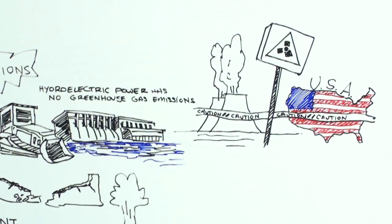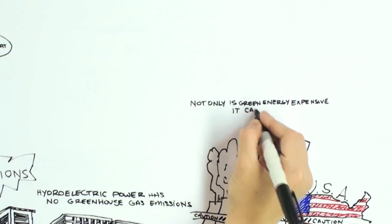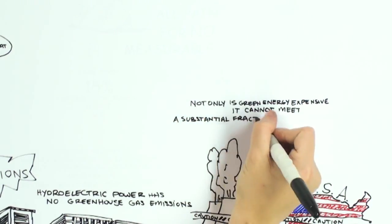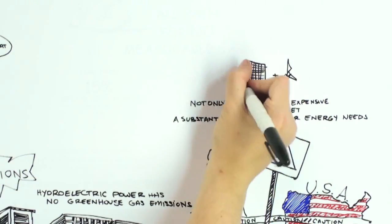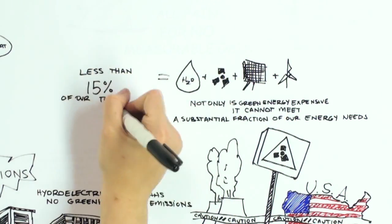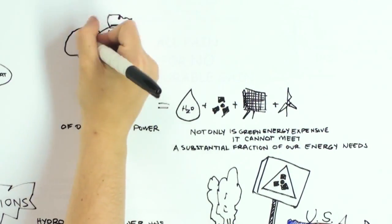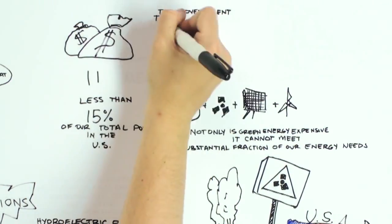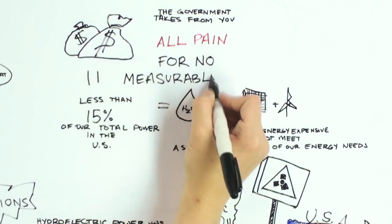The bottom line is this: Not only is green energy still relatively expensive, it cannot meet a substantial fraction of our energy needs. In total, solar, wind, hydro, and nuclear provide less than 15% of all the energy used in the United States, which means that the huge sums of extra money the government takes from you to spend on these systems is almost all pain for no measurable gain.